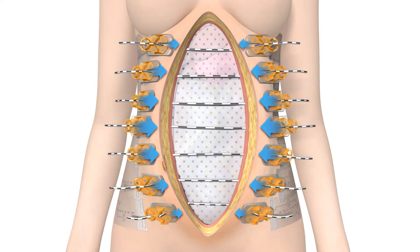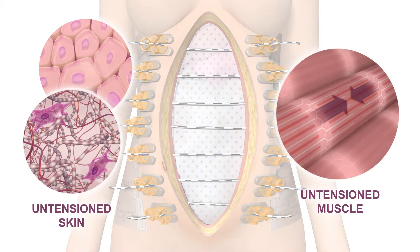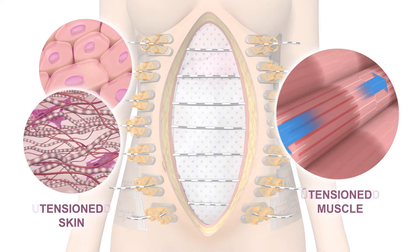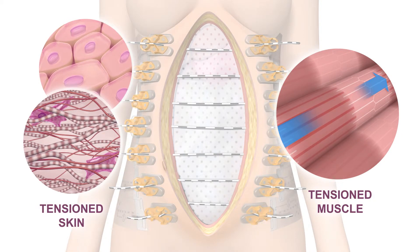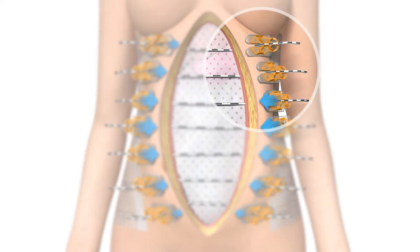SouthMedic's Abra abdominal device provides a dynamic appositional tension that counters these retraction forces. Early application of this system restores the normal elastic tension of skin and muscle. Each elastomer can be individually adjusted in seconds to precisely control the wound closure on a day-by-day basis.